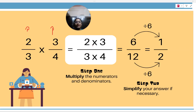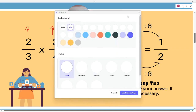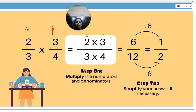When we multiply, we multiply the numerators together and the denominators together. The numerator multiplied by the numerator, and the denominator multiplied by the denominator. So the numerators multiply: 2 into 3 equals 6, and the denominators: 3 into 4 equals 12.